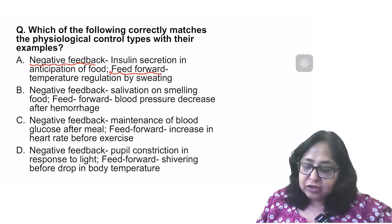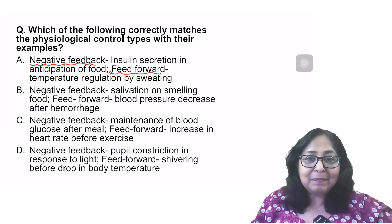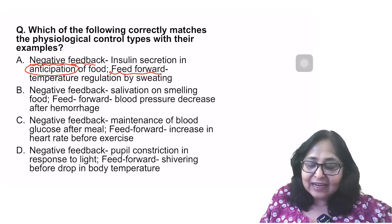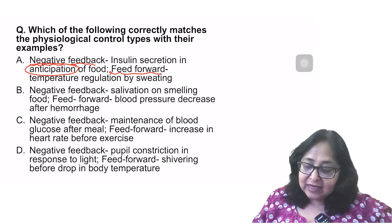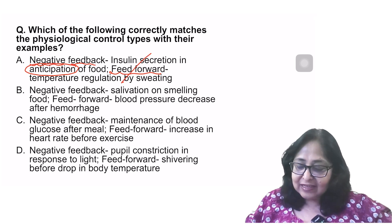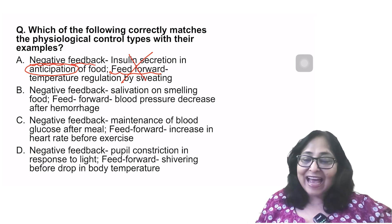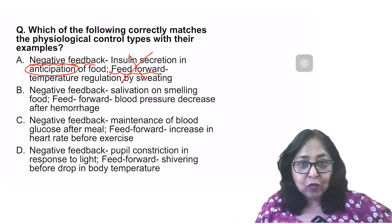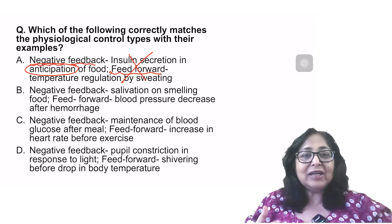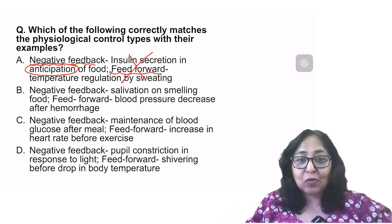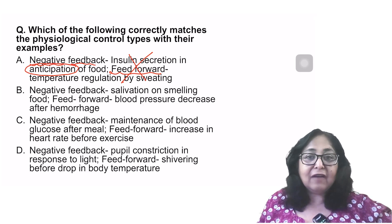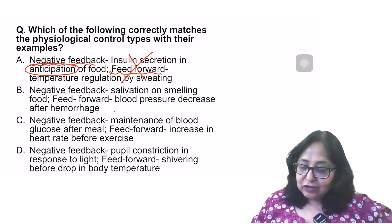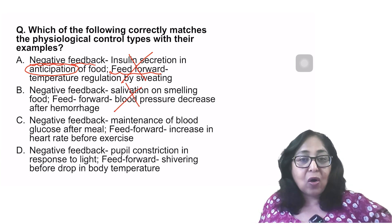Now the first one says negative feedback: Insulin secretion in anticipation of food. The moment something happens in anticipation, that is a feed forward mechanism. So this, and it says feed forward temperature regulation by sweating is in fact a negative feedback. So this is incorrect. Negative feedback: Salivation on smelling food. Salivation in anticipation of food is also a feed forward mechanism. So this becomes incorrect.